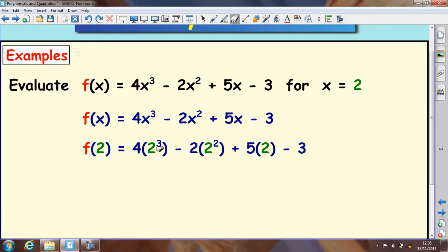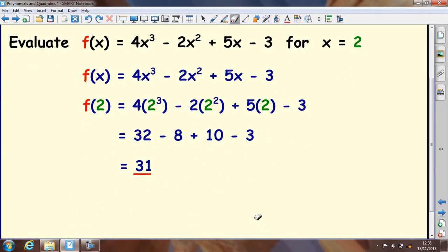2³ is 2 times 2 times 2, so that's 4 times 8, which comes to 32. 2² is 4 times 2 is 8, so take away 8, and then plus 10, take away 3, and you get the answer of 31.